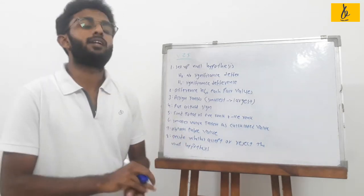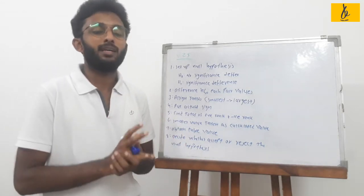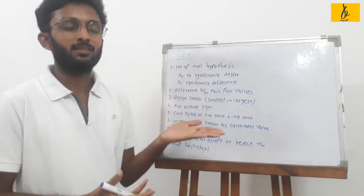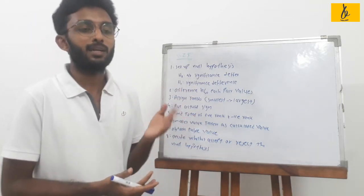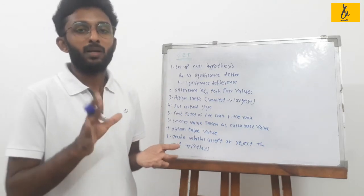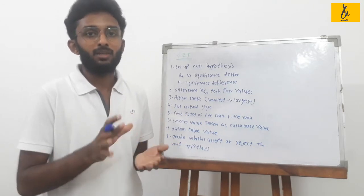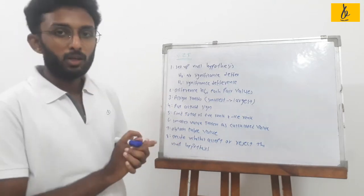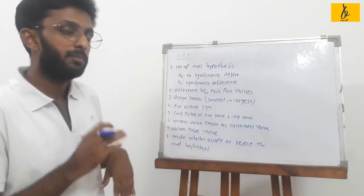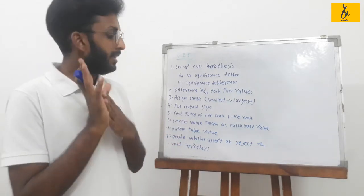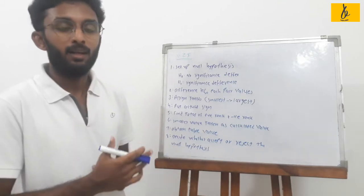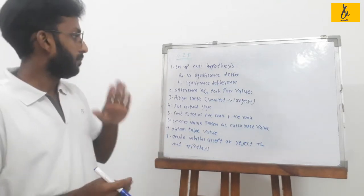Then we obtain the critical value from the Wilcoxon table. We compare the calculated value to the table value, and based on that comparison we decide whether to accept or reject the null hypothesis.